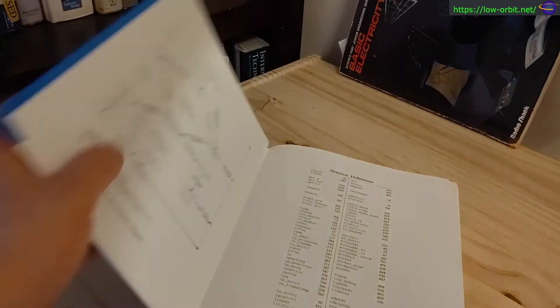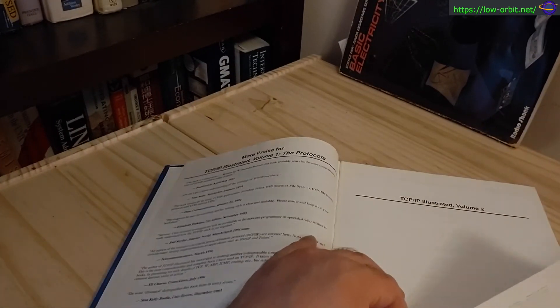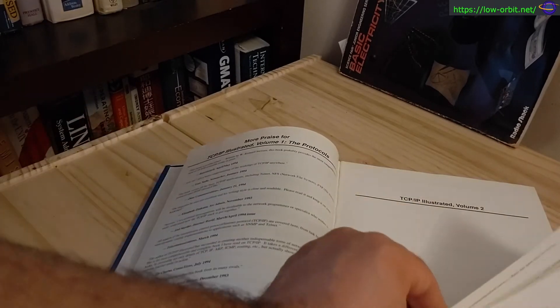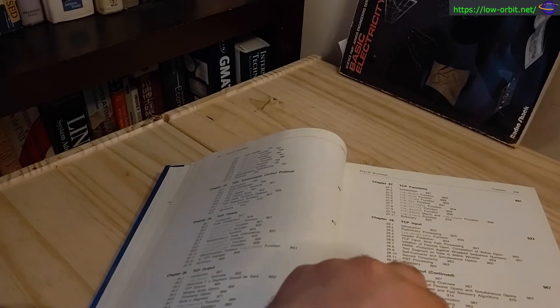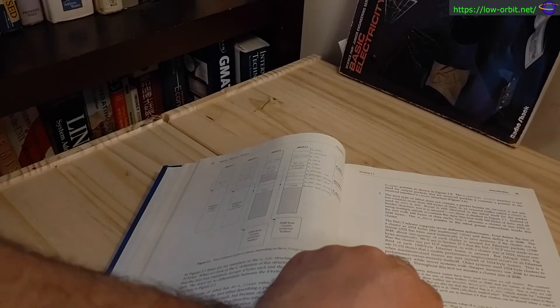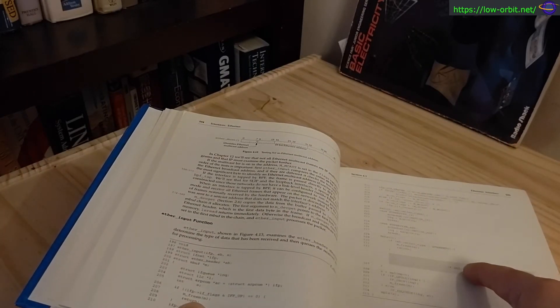Let's look at volume two. I forget what the differences between these two were, it's been so long. Volume one was the protocols and volume two is the implementation. This talks about implementing TCP/IP, so you'll see actual code here.